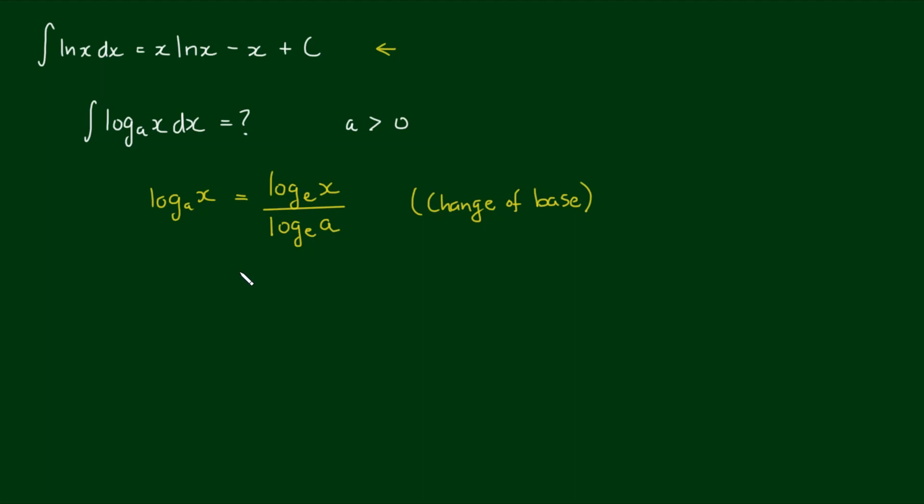And of course, log to the base e is simply the natural log. So we have the natural log of x divided by the natural log of a.